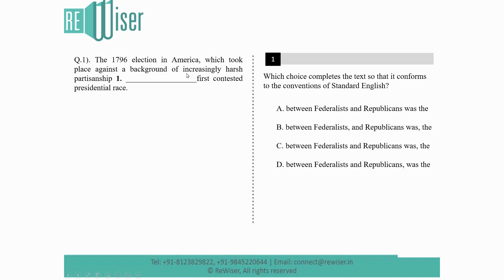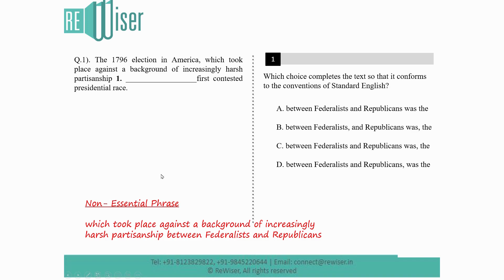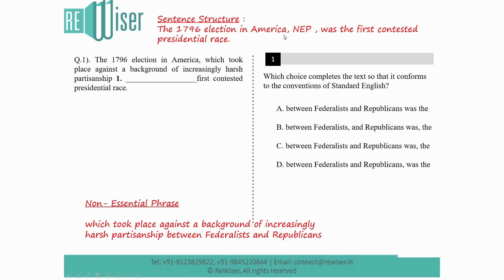We need to see exactly where the phrase ends. The full non-essential phrase is: 'which took place against a backdrop of increasingly harsh partisanship between the Federalists and the Republicans.' As per the rule, a non-essential phrase must be surrounded by commas — a comma before it as well as after it. If we ignore the phrase, the sentence is simply: 'The 1796 election in America was the first contested presidential race.' Inside that sentence, you have a non-essential phrase beginning with the 'which' clause.